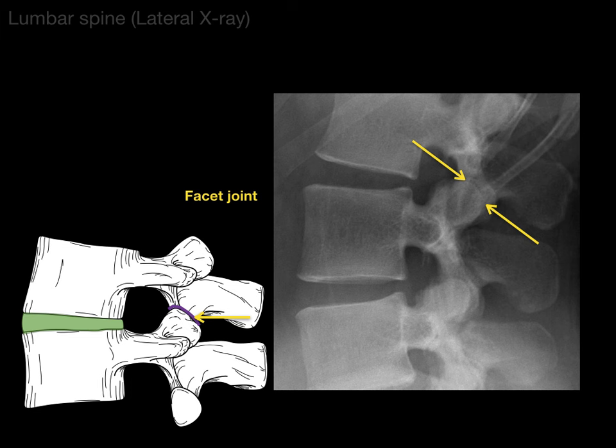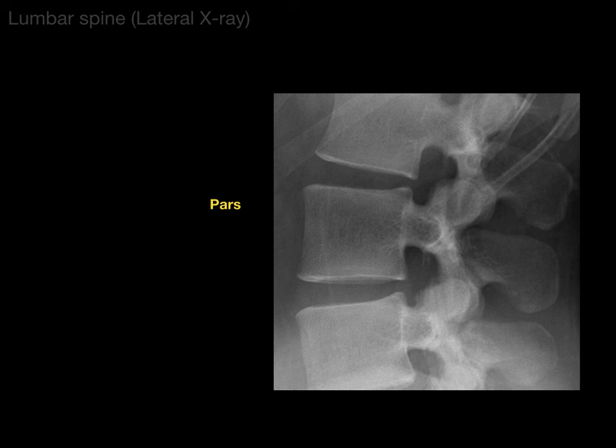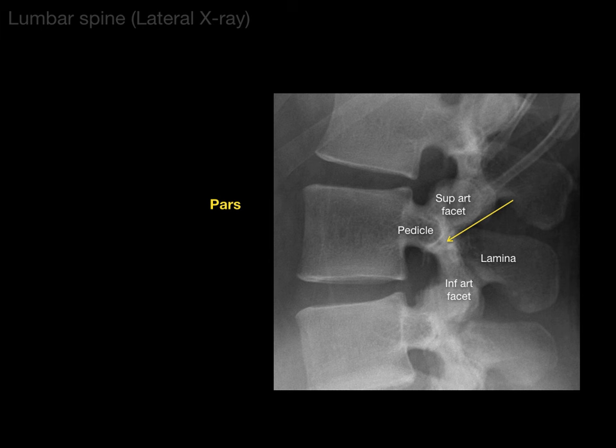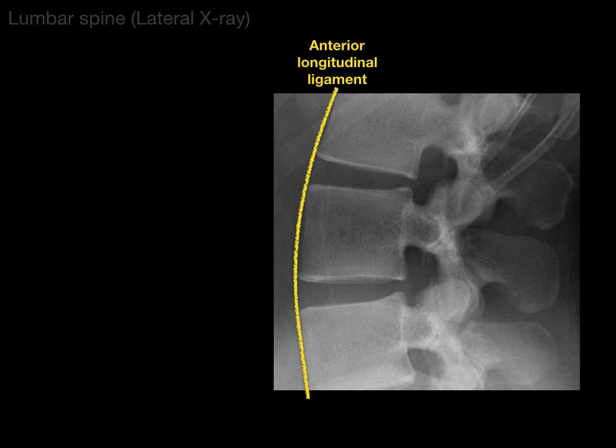Now, the structure called the pars, or pars interarticularis. It's hard to just point to at first. One of the ways you find the pars — which means 'a part of' — is to find these four structures and it's in between them. Find the superior articular facet and the inferior articular facet of the same vertebra, then find the pedicle and the lamina — and between all four of those, there is the pars. Also, the yellow line shows where the anterior longitudinal ligament would be located, and on the back of the vertebral body is the posterior longitudinal ligament.